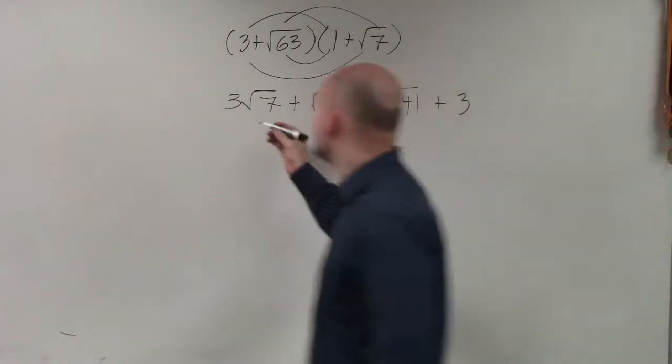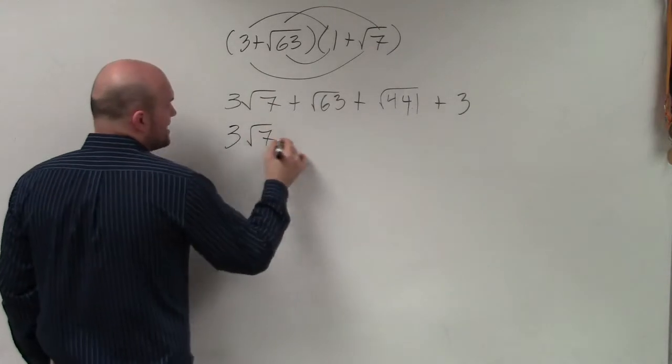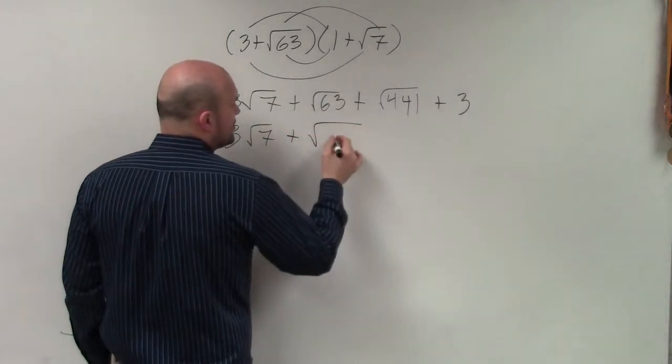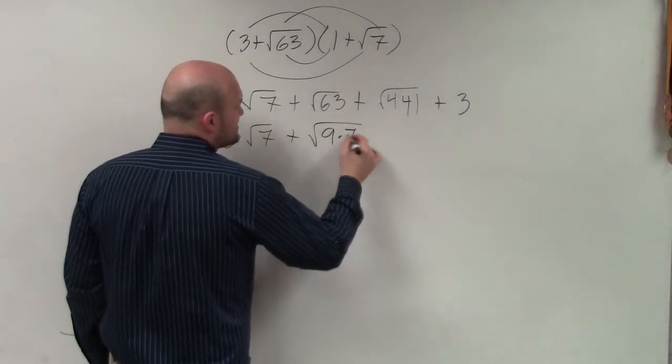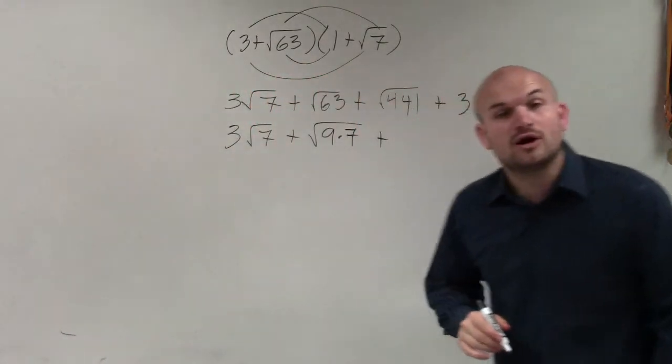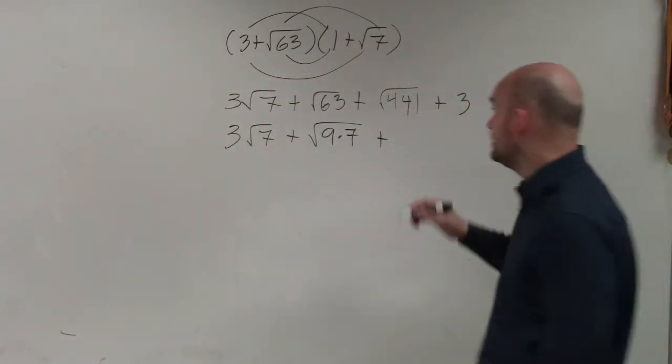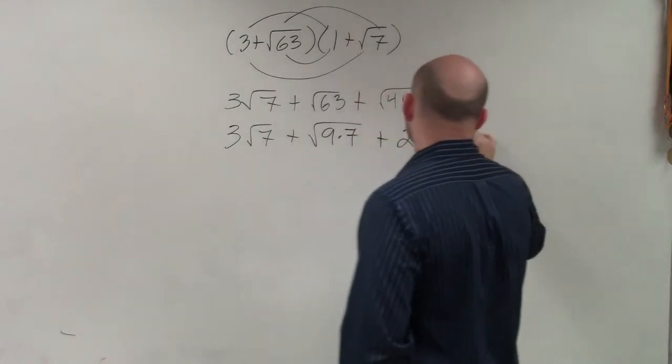9, right? So I can rewrite this as 3 square root of 7 plus the square root of 9 times 7 plus the square root of 441 is going to be 21 plus 3.